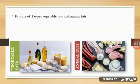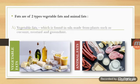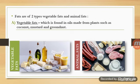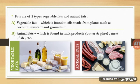Fats are of two types: vegetable fats and animal fats. Vegetable fats are found in oils made from plant products such as coconut, mustard, and groundnut. Animal fats are found in milk products like butter, ghee, meat, and fish — products obtained from animals.